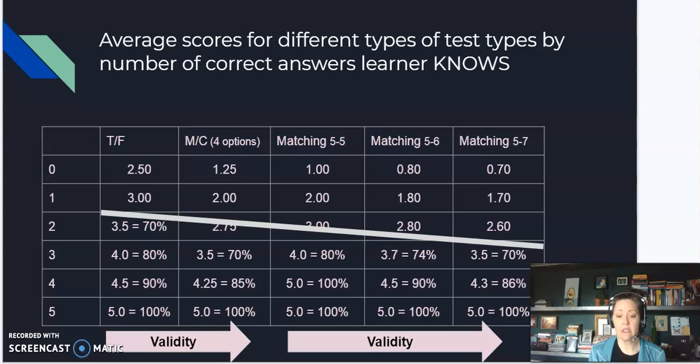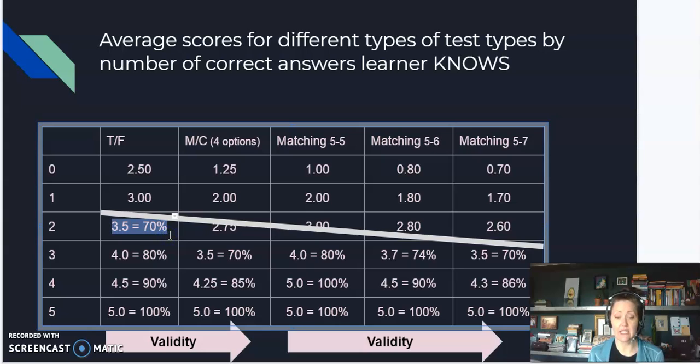So we can see that if we set passing on the exam at 70%, a learner could pass the assessment knowing only two out of every five test questions. Now you can see the concern there, right? If a student only knows two out of every five, that's less than half, but because of the ability to just guess and it end up being the right answer, they are more likely to pass a true or false question with knowing less than half of the content.